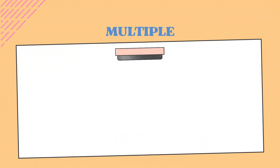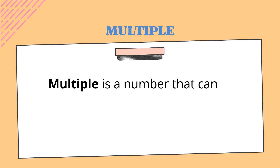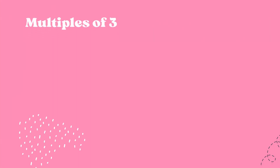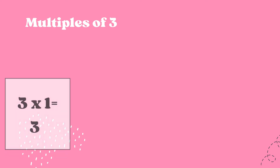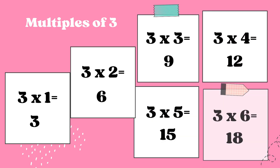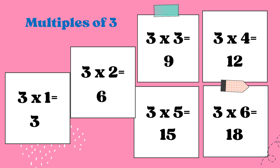Next, we're going to talk about multiples. What is a multiple? A multiple is a number that can be produced by multiplying a smaller number. These are some of the multiples of three. The multiples of three are 3, 6, 9, 12, 15, and 18. These are the first six multiples of three.